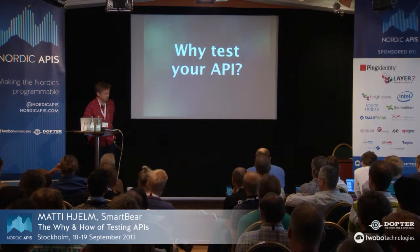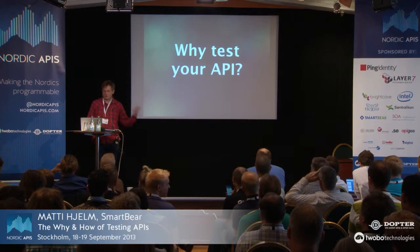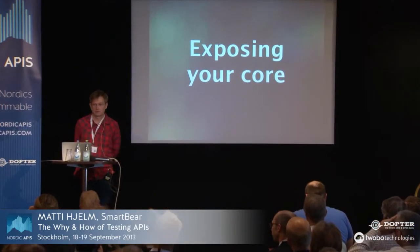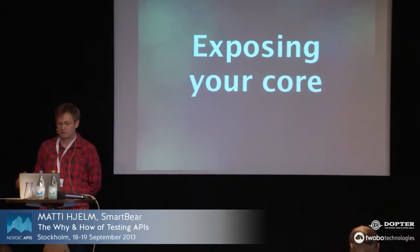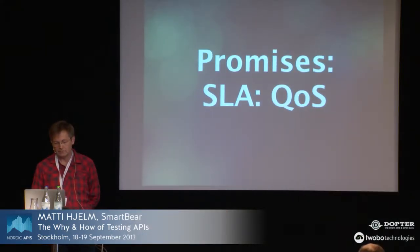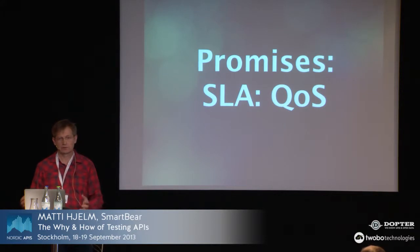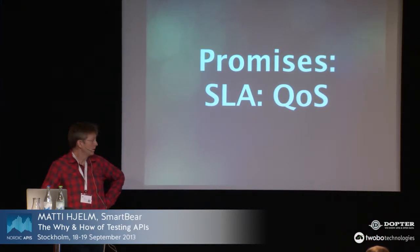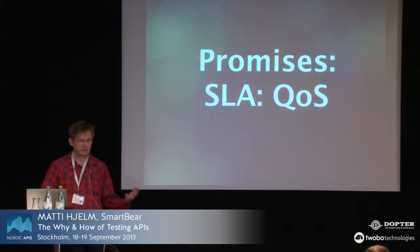Why test your API? The APIs are for interaction and information sharing. One big reason is because you're exposing your core — you're exposing sensitive data. You want to be 100% in control of this and be sure who can access it. Also, you make promises: customers expect some kind of service level agreement where you define quality of service — how many hours will your API work, what quality of data. Security too — you have to promise that it works, and these are things you need to test before you can actually promise them.